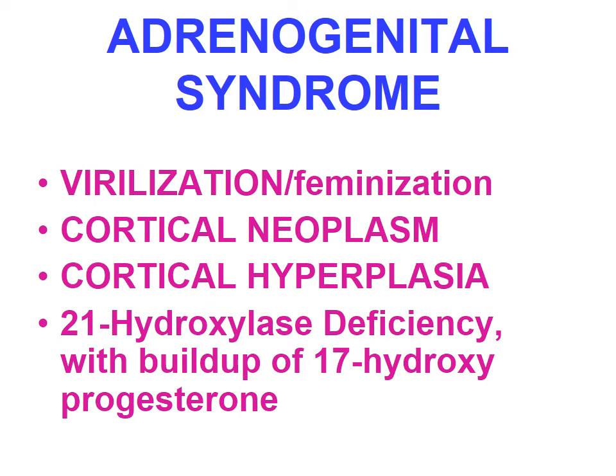Adrenogenital syndrome is characterized by virilization in females and feminization in males, mainly due to cortical neoplasms — more likely adrenocortical carcinoma — which secrete excessive androgens, or due to cortical hyperplasia. Congenital adrenal hyperplasia is an autosomal metabolic disorder resulting in defective enzyme production in adrenal steroid synthesis. 21-hydroxylase deficiency results in buildup of 17-hydroxyprogesterone due to defective conversion of progesterone to 11-deoxycorticosterone and accounts for 90 percent of congenital adrenal hyperplasia, manifesting in three different types of syndromes.